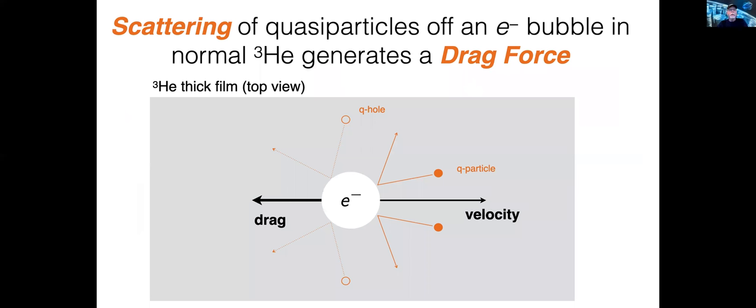Now, in normal helium-3, an electron bubble moves through the gas of quasiparticle excitations, and it experiences a headwind from the imbalance of collisions in the forward direction leading to the Stokes drag on the electron bubble. In a Fermi liquid, there are two types of quasiparticle excitations: quasiparticles and quasiholes, and they both contribute equally to the Stokes drag.